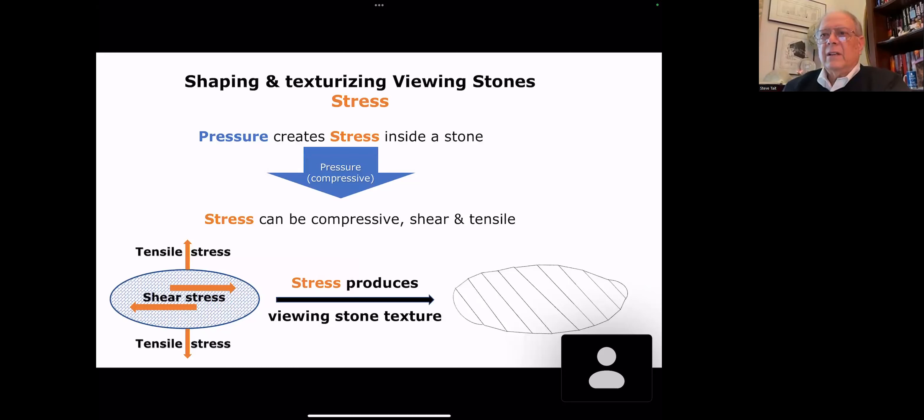Pressure creates stress inside a stone. Stress is more complex. It can be compressive, shear and tensile, or some very wild combinations of both. If you take a viewing stone in this case, I just chose an elliptical shape, and you pull on it in opposite directions, you have a tensile stress. If you take your hand and you push on the top of it or the sides, each hand moves in opposite directions, you now have a shear stress. And those two produce the lines, and now you can see a distorted shape here, plus some lines through it.